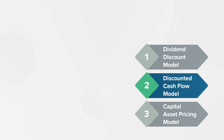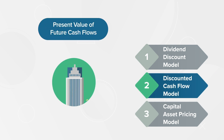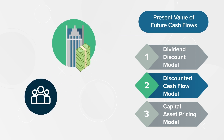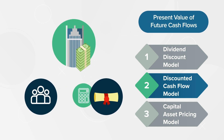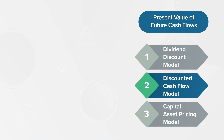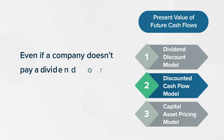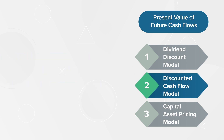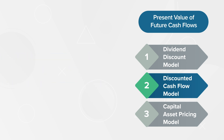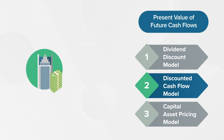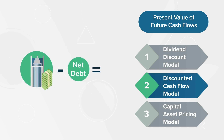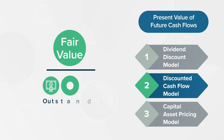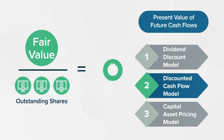The Discounted Cash Flow Model, or DCF, values a company based on its future cash flows discounted by the investor's expected rate of return, which is then used to calculate the stock price. The DCF model can be used even if a company doesn't pay a dividend or has unpredictable dividend returns. Using the Discounted Cash Flow Model, the enterprise value of a company is calculated by adding up the value of future earnings, then discounting the earnings by the weighted average cost of capital, then subtracting net debt from the enterprise value to compute the company's fair value, and dividing by the number of outstanding shares to calculate the value of a share.